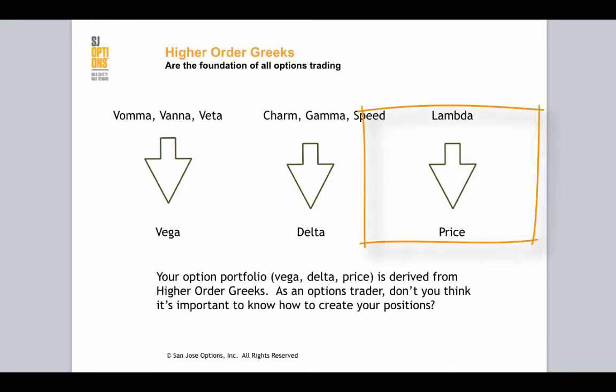In the third column over here, I have Lambda filtering down the price. It's another higher order Greek where the industry just does not have any education or application of how to use it. As your underlying product moves around, your option prices change.